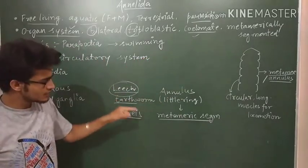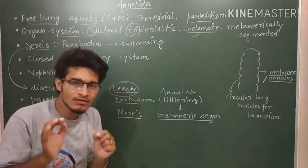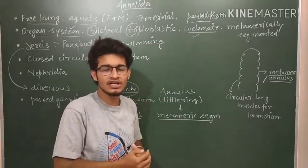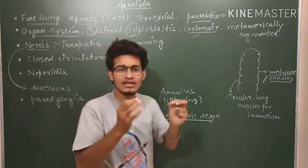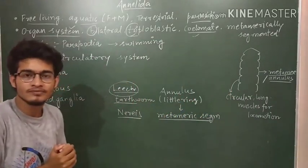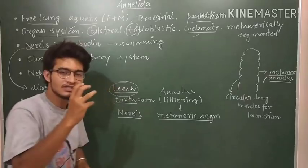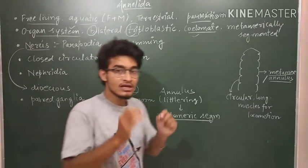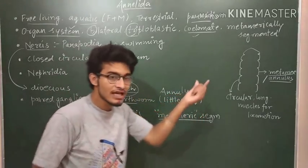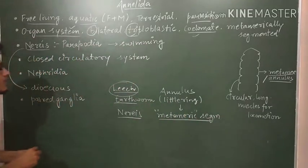And metamerically segmented which is the most characteristic feature. There is a serial repetition of at least some organs, outside the body and inside the body. We have already talked about metameric segmentation in the initial lectures where you can see there is serial repetition. We can see some organs from outside that they will repeat. This pattern, this specific pattern, is known as metameric segmentation. And why metameric? Because the segments are known as metameres or annuli, which are the little ring-like structures.